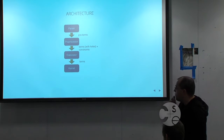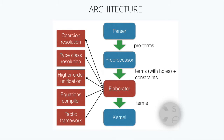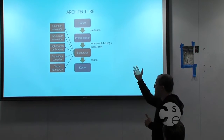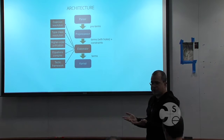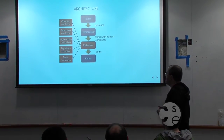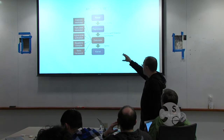The architecture: Lean should be viewed as a compiler. You have a parser, a preprocessor, the elaboration step, and finally the kernel that checks the fully elaborated term where all gaps have been filled by the elaborator. The elaborator has many steps: coercion resolution, type class resolution, higher-order unification, the compiler for recursive equations, and the tactic framework, which is the gateway for automation. About 90% of the project is in the elaboration step and its different modules.